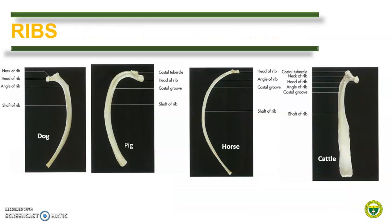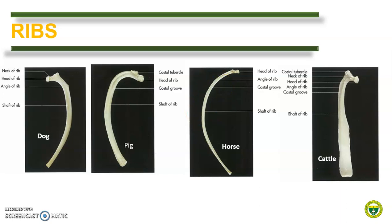Now, let us compare the ribs of different animals. It is easy to differentiate the ribs based on the appearance of the shaft. In dogs, the shaft is distinctly cylindrical. In pig and in horse, the shaft is narrow. A distinct angle is seen in the pig. In the horse, there is a distinct curve in the dorsal third of the ribs. In ruminants, both small and large ruminants, the shaft is wide and flat with a very long neck.